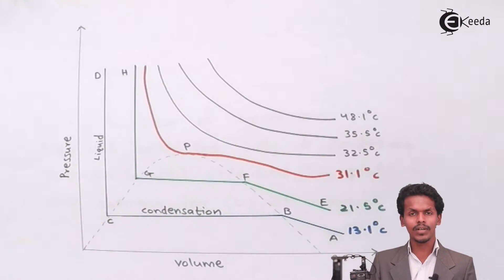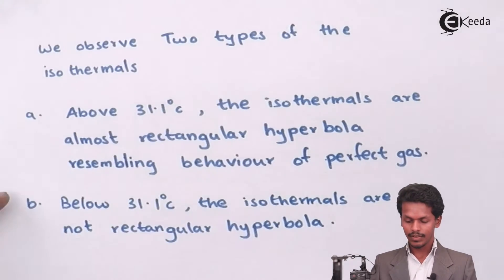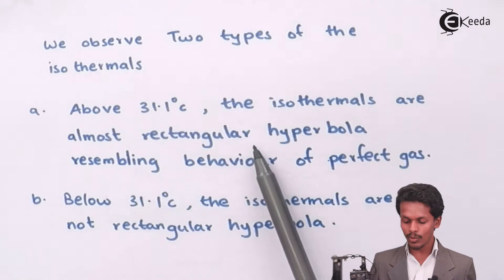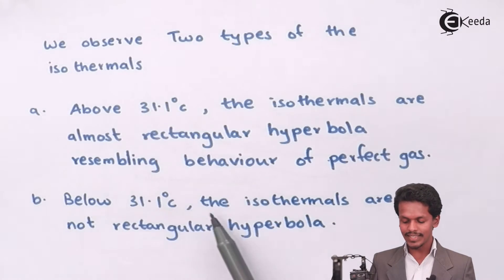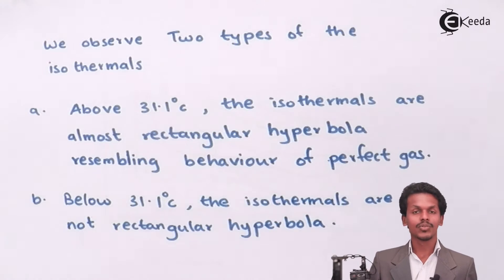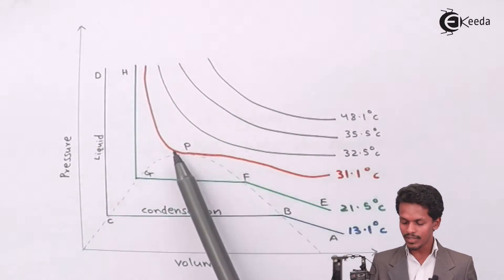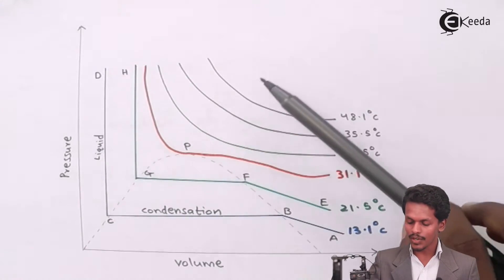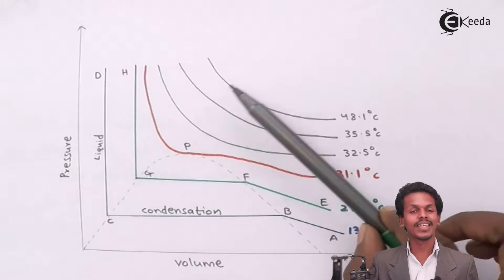There are two kinds of isotherms observed. Above 31.1 degrees Celsius, the isotherms are almost rectangular hyperbolas, resembling the behavior of a perfect gas. Below 31.1 degrees Celsius, the isotherms are not rectangular hyperbolas. So at 31.1 degrees Celsius we get two distinct types of isothermal behavior — one above and one below that temperature.